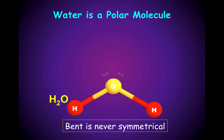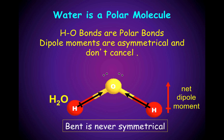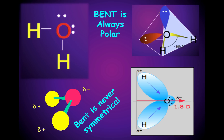Water is a polar molecule. It has a bent shape. Bent is never symmetrical. The hydrogen-oxygen bonds are polar bonds. The dipoles are asymmetrical and do not cancel, giving an overall dipole moment facing up towards the oxygen atom. The oxygen will acquire a partial negative charge, and the hydrogen will acquire a partial positive charge. Remember, bent is always polar.